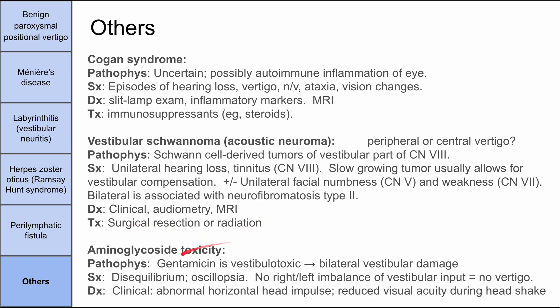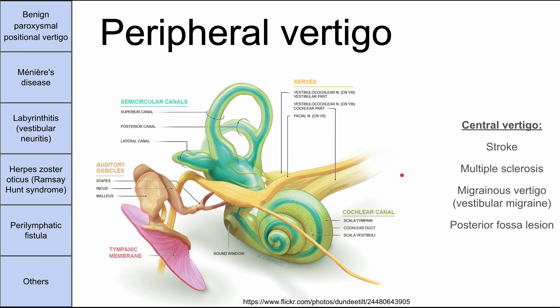Lastly, aminoglycoside toxicity: gentamicin is vestibulotoxic and can cause bilateral vestibular damage. Because both sides are equally damaged, there's no left-right imbalance of inputs, so you typically don't get vertigo. You might instead have disequilibrium or oscillopsia, along with bilateral hearing loss. Diagnosis is clinical; an abnormal horizontal head impulse test and reduced visual acuity during head shake may be present. That was a short overview of peripheral causes of vertigo. I hope it was helpful.